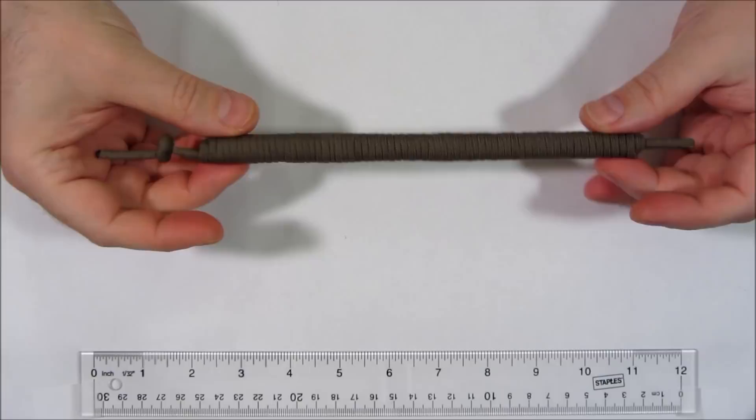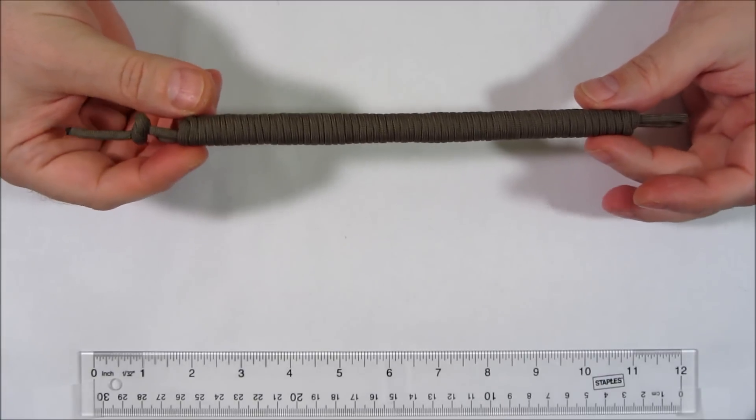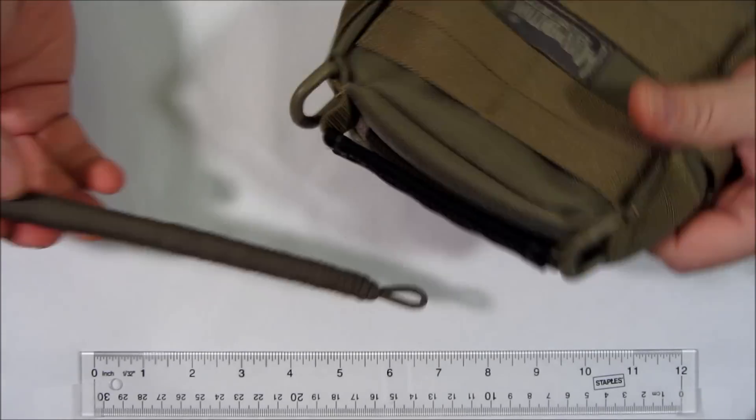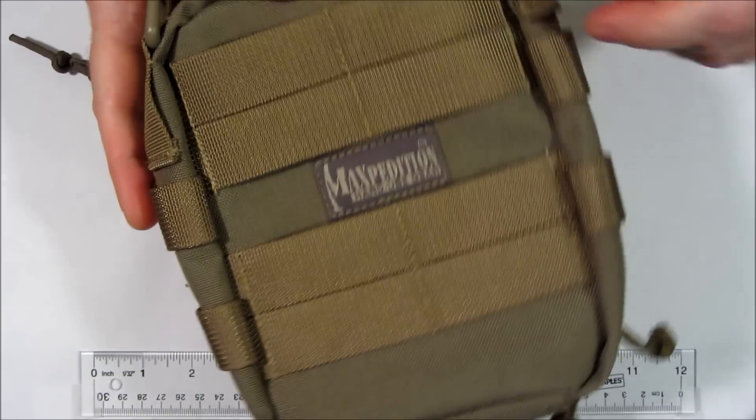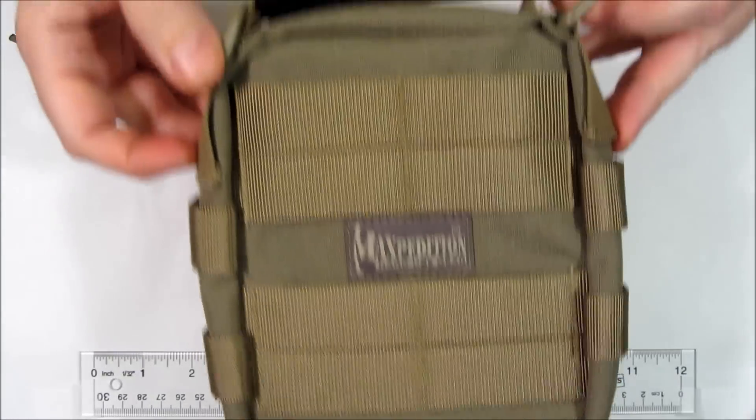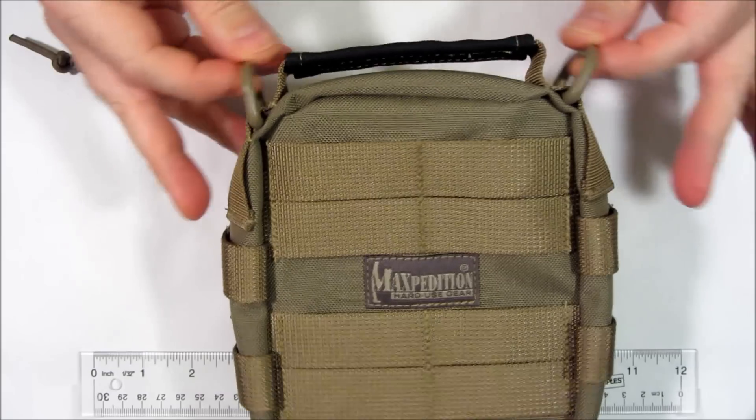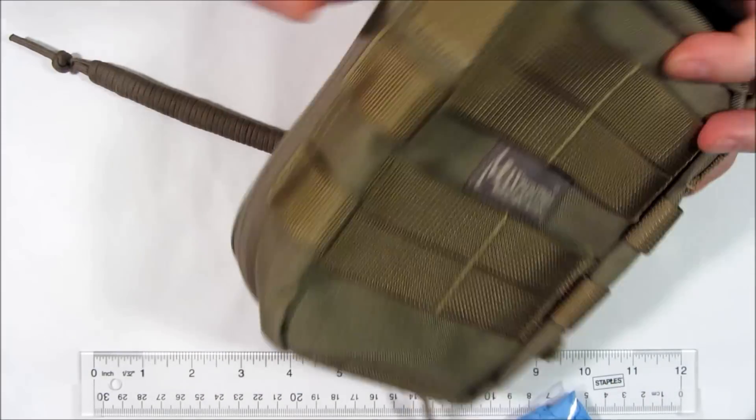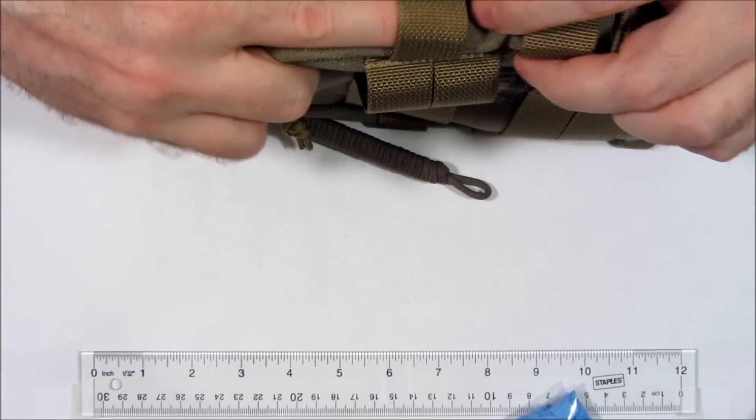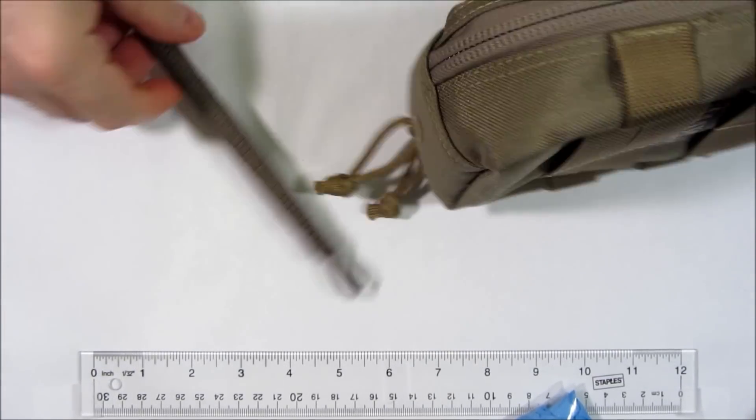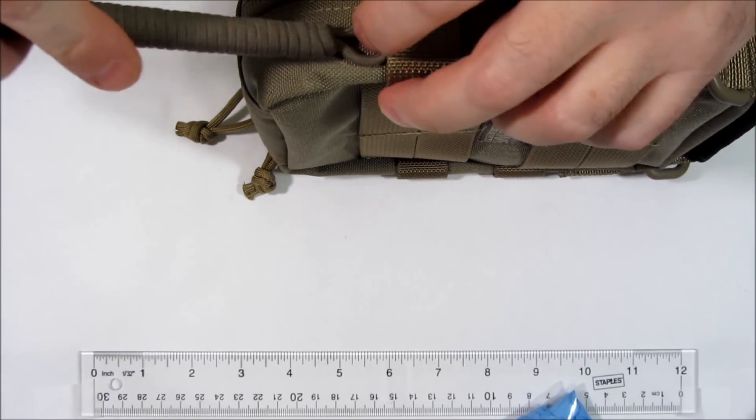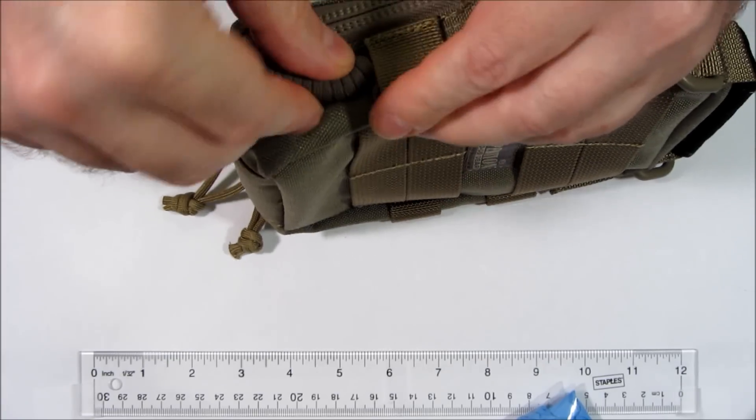Another use for the bracelet is as a gear handle. What you can do is take any device such as this Maxpedition FR-1, anything that has two D-rings, for instance, or this has these convenient loops here. What you do is you stick the bracelet through the loops.